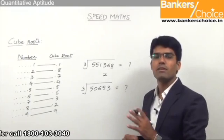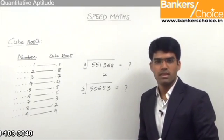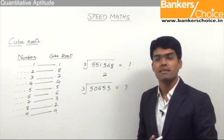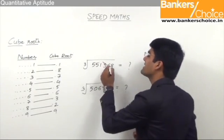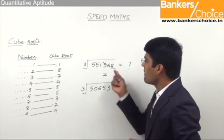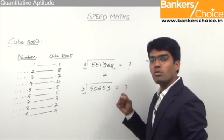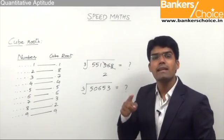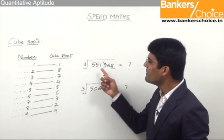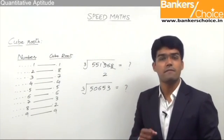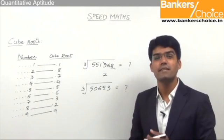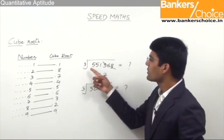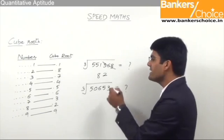The second step is similar to the second step of square roots. In square roots, we leave the last two digits; here we leave the last three digits. From the remaining part — which is 551 — find the number that is immediately less than 551 and is a perfect cube. That is 512, which is 8 cubed. So the tens place digit is 8, and the answer for the cube root of 551368 is 82.